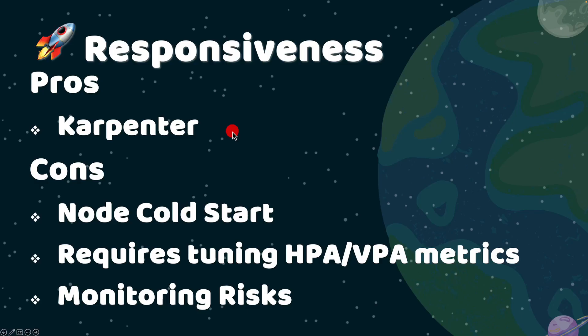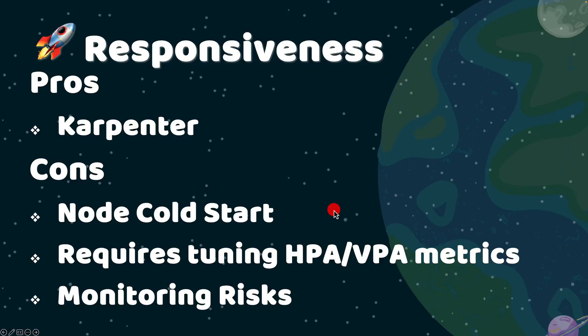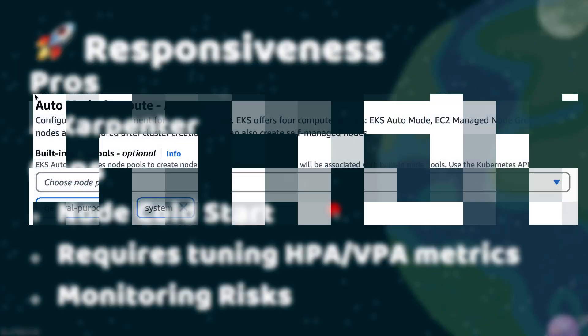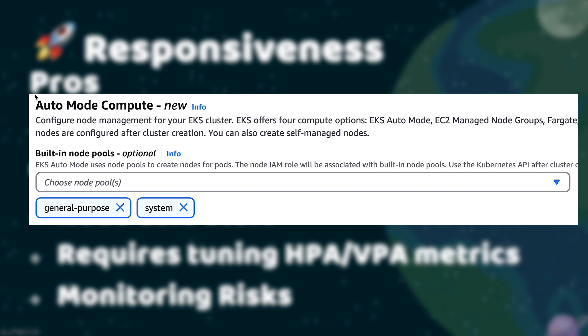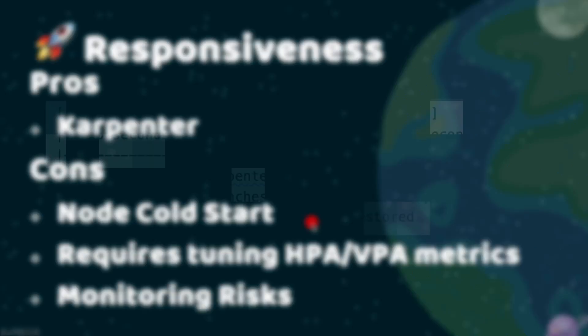But remember, you will pay for the convenience — here is a screenshot showing the pricing for reference. There is also something called Cold Start Delay. Auto Mode has two main node pools: general purpose and system. If your app needs super-fast response times, like 100 milliseconds, you may want to add a Spot node pool to handle traffic spikes, but again, this will cost more.